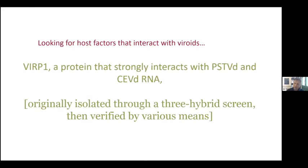We have been looking for factors that interact with viroids. One of the first ones that was known was Pol2 — DNA-dependent RNA Pol2 is the one that replicates the viroid; in this case it functions as an RNA-dependent RNA polymerase, and it does make a lot of mistakes. We used a three-hybrid system and through this we fished out a couple of proteins. The strongest binder was a protein we called VIRP1, viroid binding protein 1.